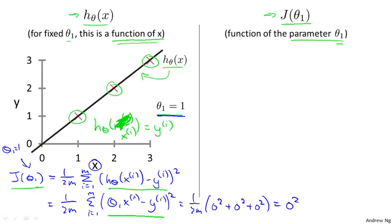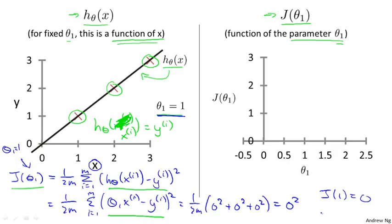So we now know that J of one is equal to zero. Let's plot that. On the right I'm going to plot my cost function J. Notice that because my cost function is a function of my parameter theta one, when I plot my cost function, the horizontal axis is now labeled with theta one. So I have J of one equal to zero, and let's go ahead and plot that — you end up with a point there.